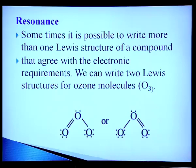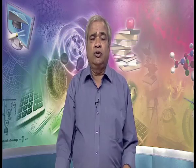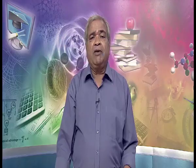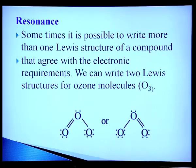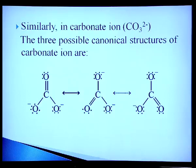Sometimes it is possible to write more than one Lewis structure for a compound that agrees with the electronic configuration — this is resonance. For ozone, we can write two Lewis structures with one double bond and one single bond, but experimentally both bond lengths are found to be equal. So the actual structure is a resonance hybrid. Similarly, resonating structures can be explained for CO₂, sulfate, and carbonate — carbonate has three resonating structures.